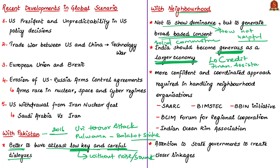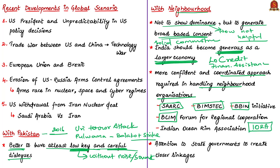The government should have a more confident and coordinated approach in handling neighborhood organizations such as SAARC, BIMSTEC, the Bangladesh-Bhutan-India-Nepal Initiative, the Bangladesh-China-India-Myanmar Forum for Regional Cooperation, and the Indian Ocean Rim Association. Equal attention of bilateral importance should be given to all these neighborhood organizations, and the central government should provide necessary attention to state governments to foster closer linkages with bordering neighbor countries.